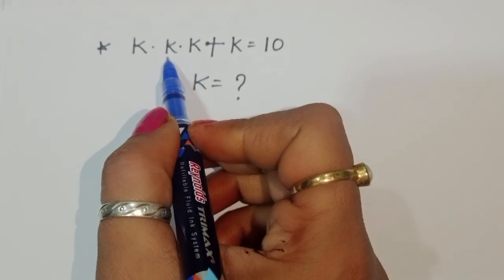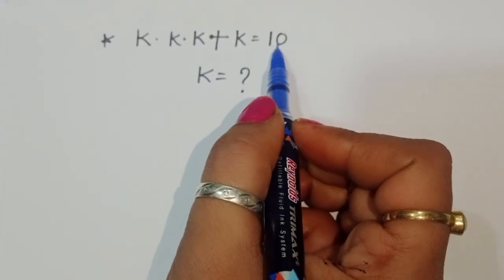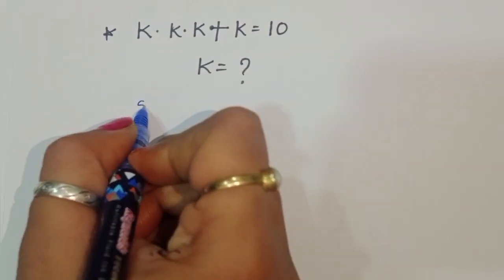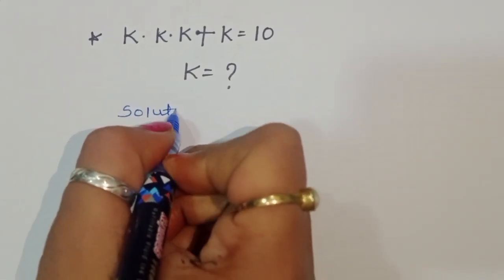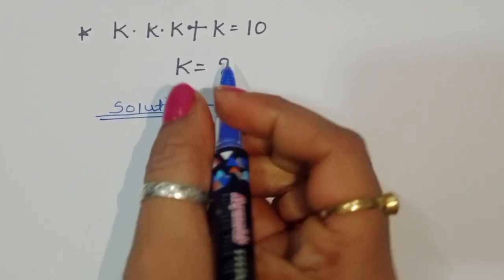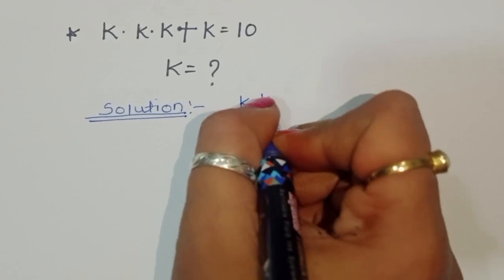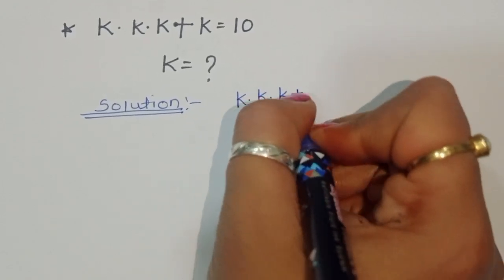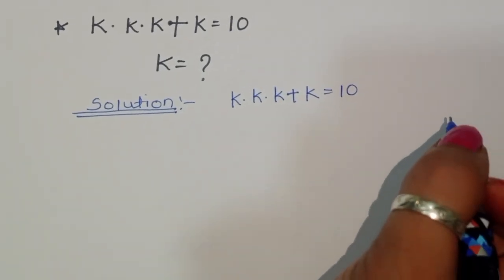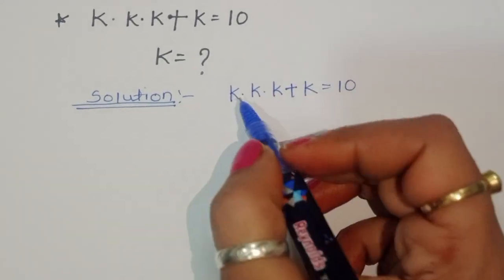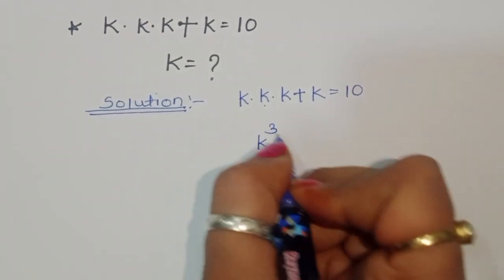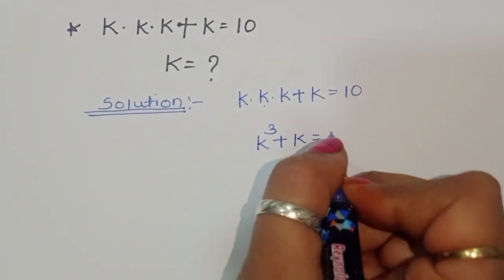The question is: k times k times k plus k is equal to 10. We have to find the value of k. So we can write k times k times k as k cubed, giving us k cubed plus k is equal to 10.